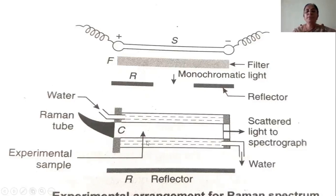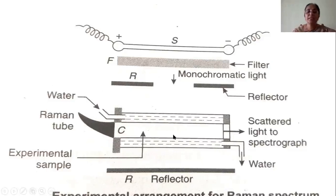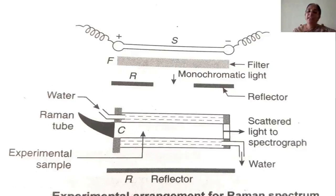This Raman tube is surrounded by a water jacket through which water flows in and out. The reason is that the incident light continuously falling on the substance could change its temperature. We want to study the effect of the light purely — how the spectral lines are getting modified. If constant heating occurs, the spectrum will not be purely due to the incident light. So water is circulated to maintain the substance temperature at a constant level.